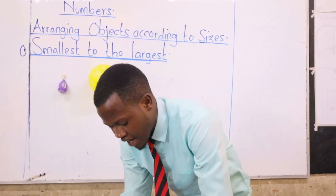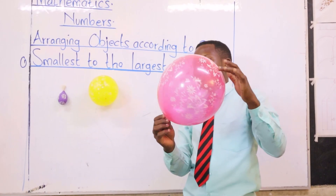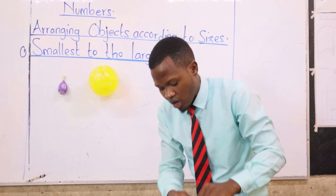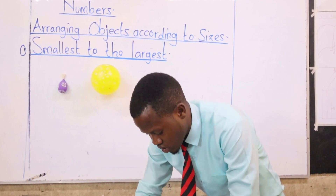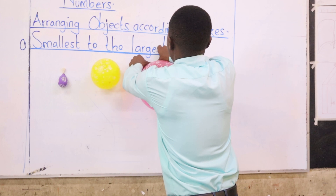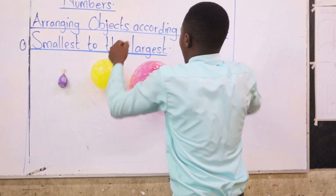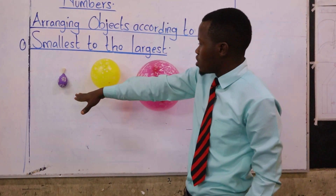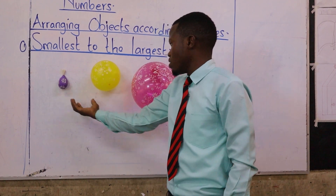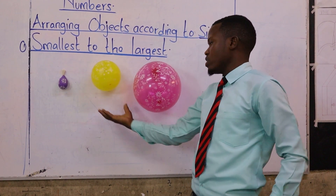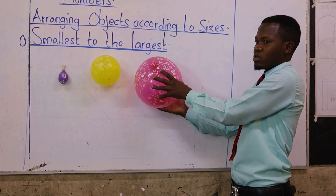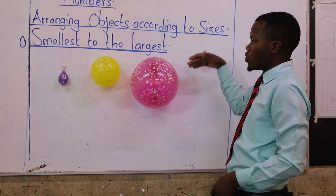And then lastly we have the red one — it is the biggest, so we put it next to the yellow balloon. Now look at them: we have started with the smallest, which is the purple balloon, followed by the yellow balloon, and then the red one is the largest. This is how we arrange from the smallest going to the largest.